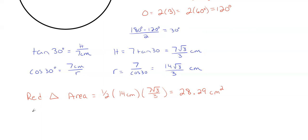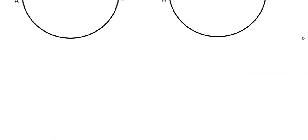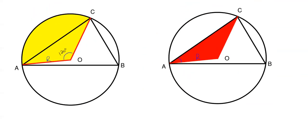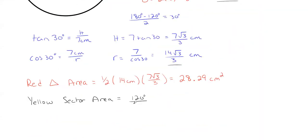All righty, so then let's work on getting the yellow sector area. So the yellow sector area or my circle sector area is just going to utilize my angle O of 120 degrees and my radius of 14 square roots of 3 over 3. So this would just be my circle sector degrees. So how much do I actually have here? Well, I have 120 degrees here out of 360. So that's my portion of my area. So it'd be 120 degrees over 360 degrees times pi r squared. Well, that's just 120 over 360 times pi times 14 square roots of 3 over 3 squared. And that gives me 68.42 centimeters squared for my yellow area.